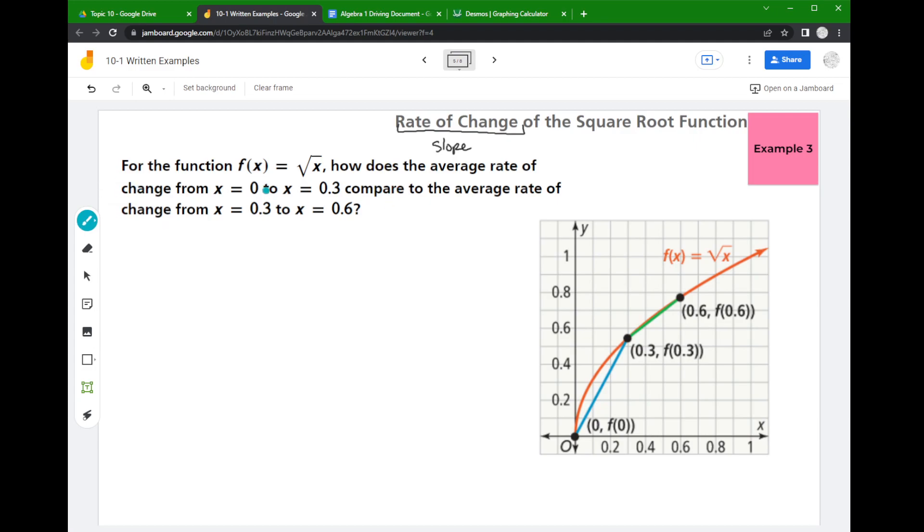This example is asking us to compare a couple of average rate of change, a couple of slopes. So these first two x values here are describing this blue segment, and they want to know what the slope is of that blue segment.